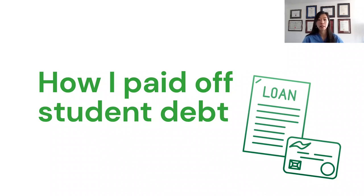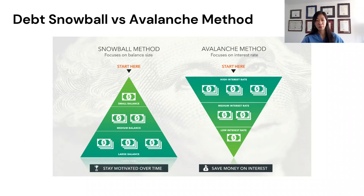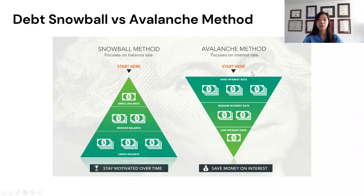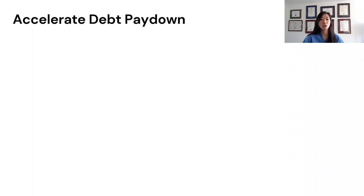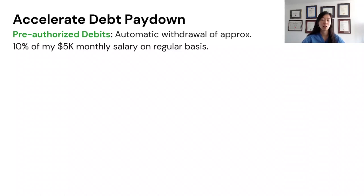So how did I pay off student debt? The most common methods discussed online are the debt snowball method — paying smallest loans first for early wins — and the debt avalanche method — paying off highest interest loans first to save money on interest. These apply more if you have multiple different loans like credit cards. For myself, I set up pre-authorized payments: I calculated about 10% of my salary, which was $5,000 per month as a resident, and had that automatically going toward my debt.